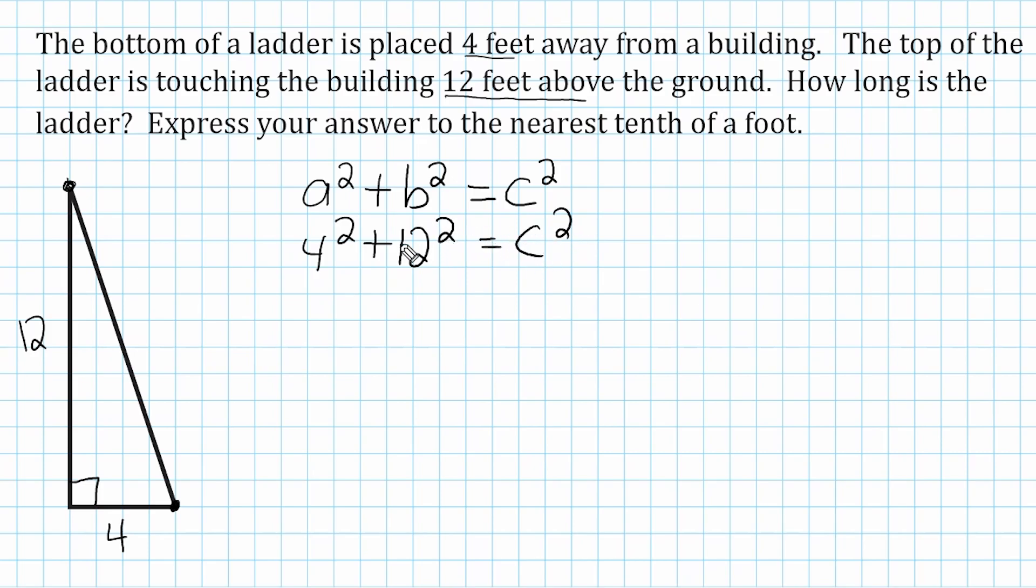And when we square 4, that's going to give us 16, and 12 squared is 144. We have to set that equal to C squared. And when we add these two values together, we get a total of 160. And that's going to be equal to whatever C is to the second power.